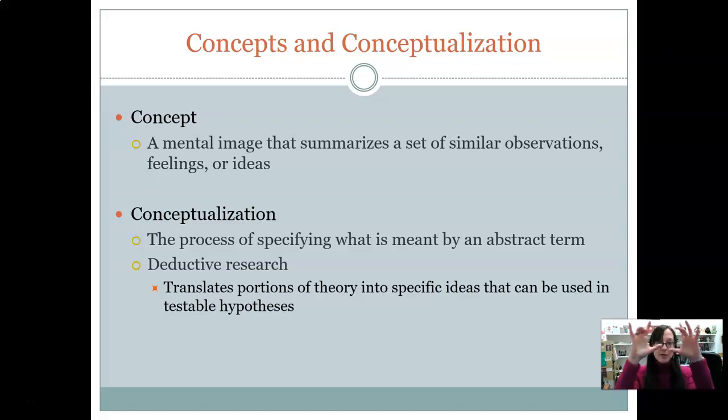So you start with this fuzzy idea, like I think anger might be related to crime. And so then conceptualization is like, well, what do you mean by anger? What type of anger are you talking about? From a deductive standpoint, if we think it has to do with the relationship between emotions and crime and there is some existing theory about that, then we're going to translate that into specifically what we're doing.